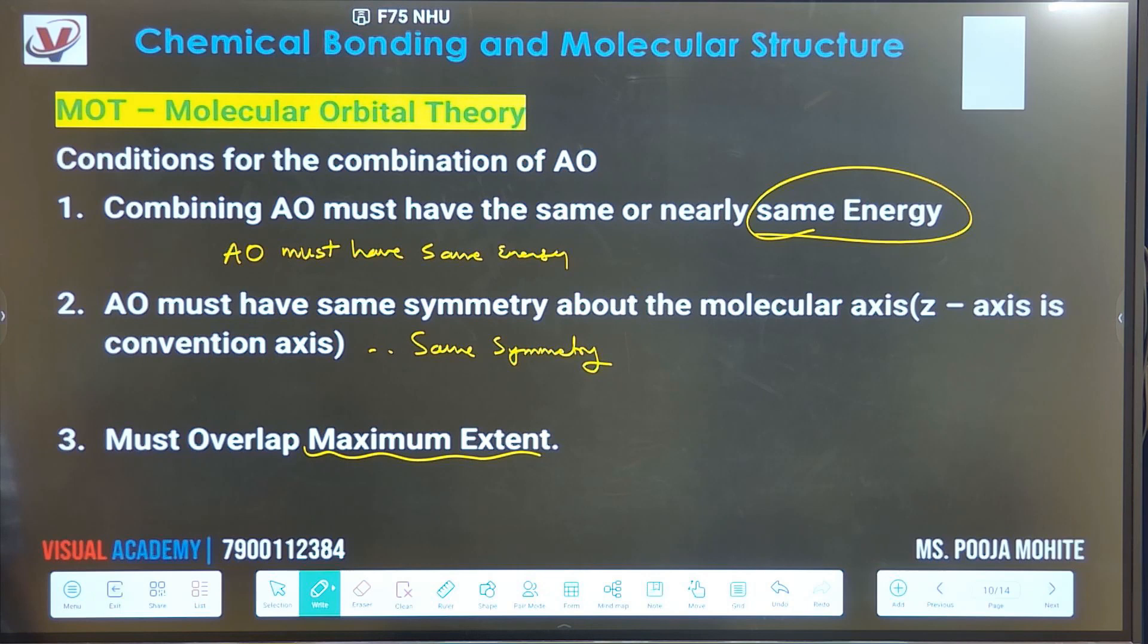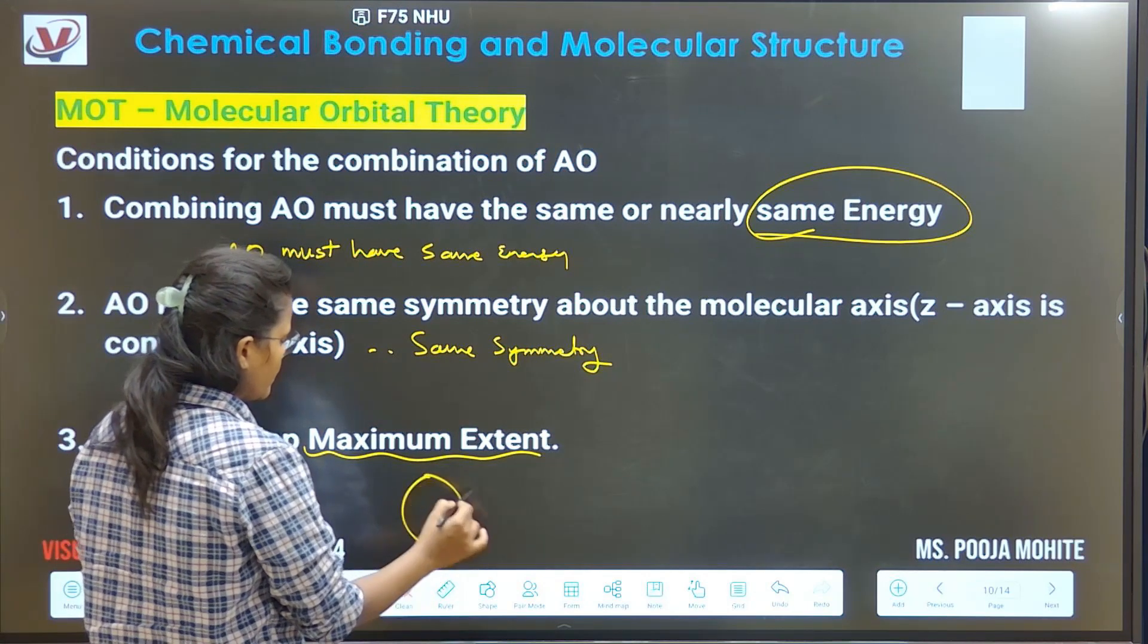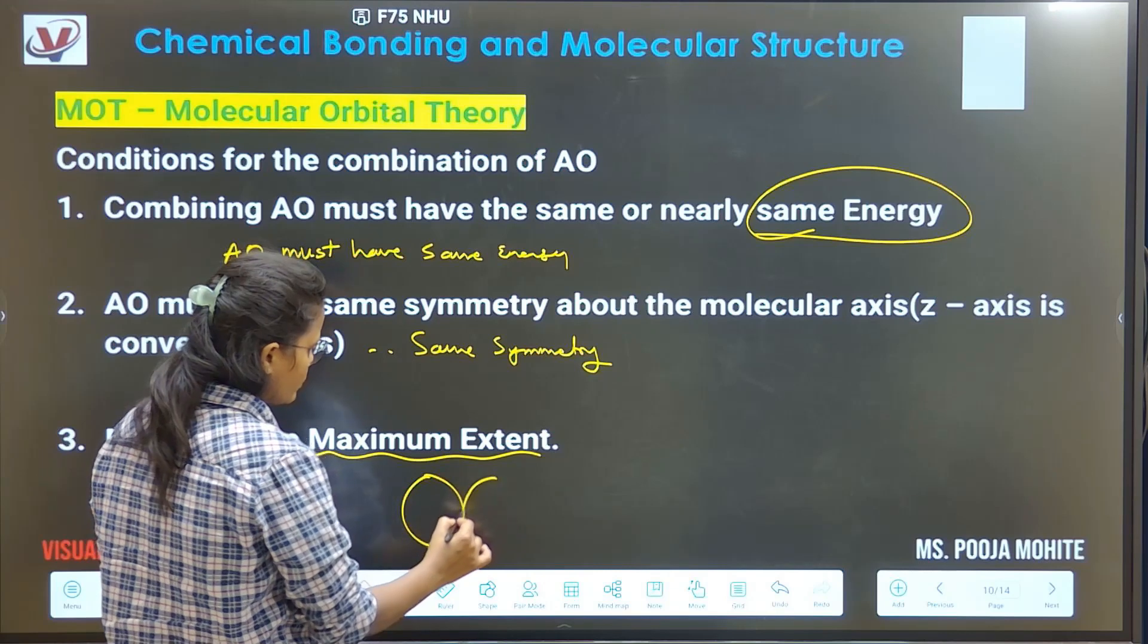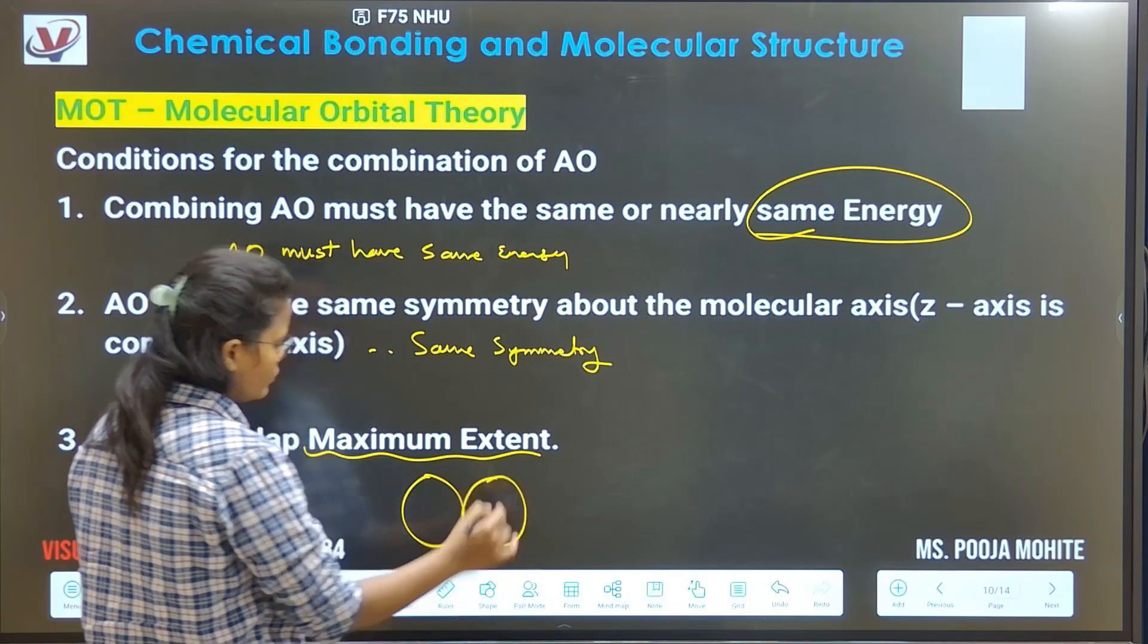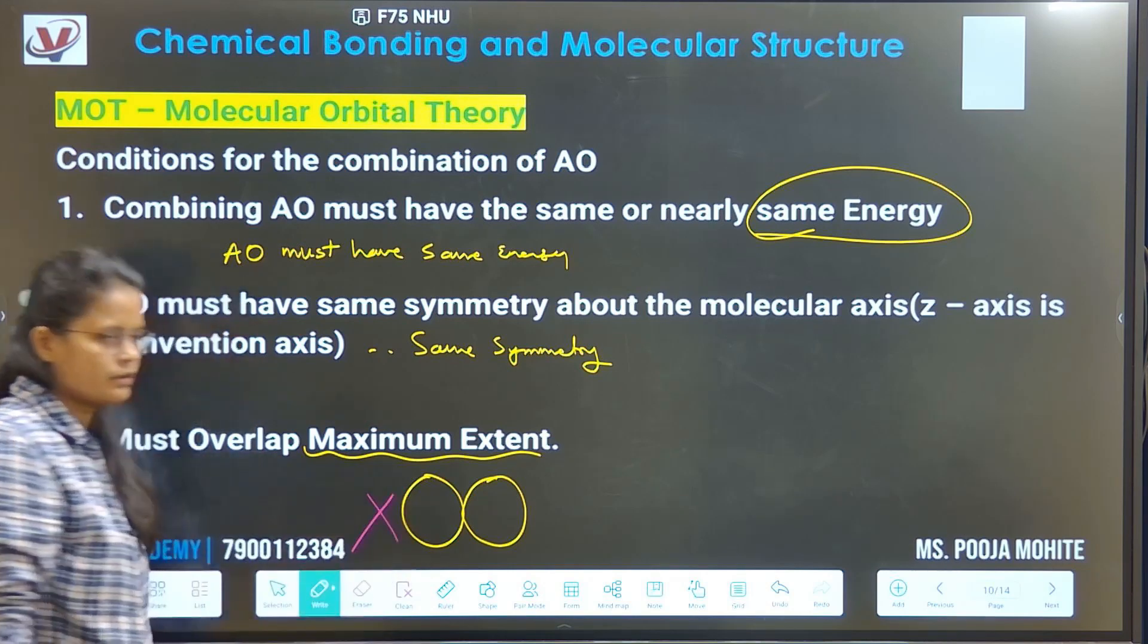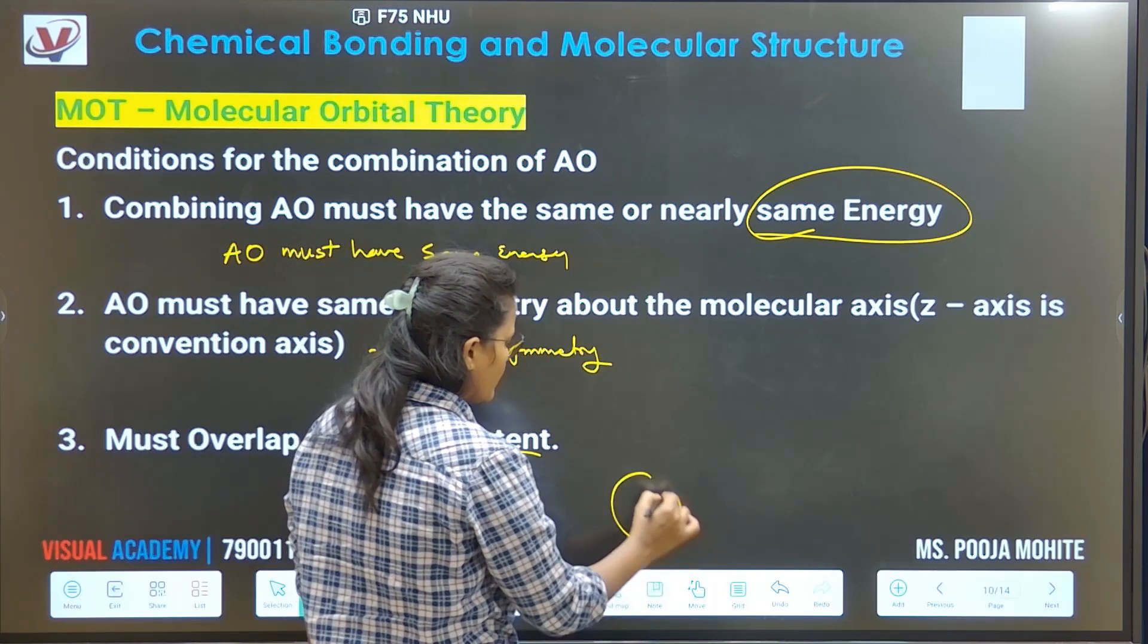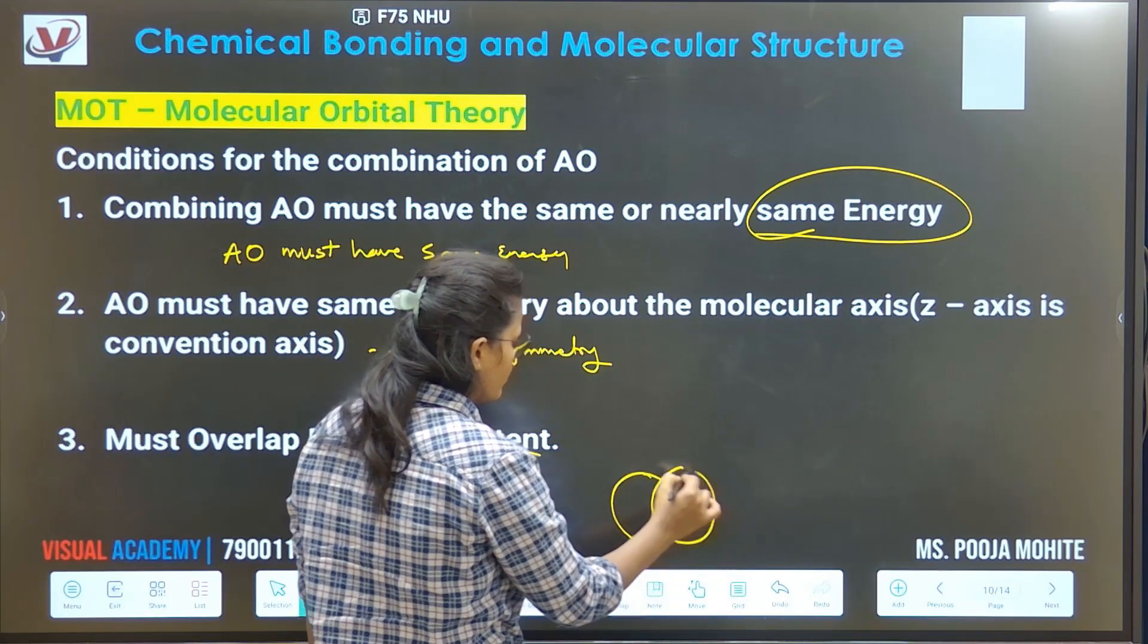It must have more extent. It should not be like if you have this orbital and the second one, orbitals should be just overlapping like this. So this is not the proper bond, this is the third point. For bonding theory, its overlapping extent should be small.